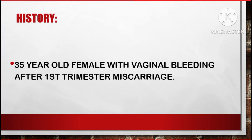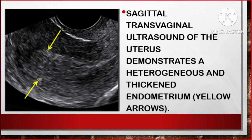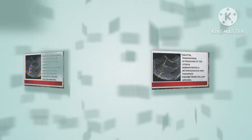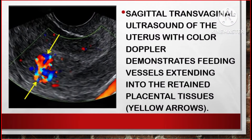Our case today is a 35-year-old female with vaginal bleeding after a first trimester miscarriage. She underwent a transvaginal ultrasound. The sagittal transvaginal ultrasound of the uterus demonstrates a heterogeneous and thickened endometrium. A sagittal transvaginal ultrasound with color Doppler demonstrates feeding vessels extending into the retained placental tissue.